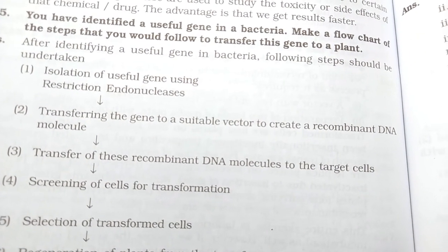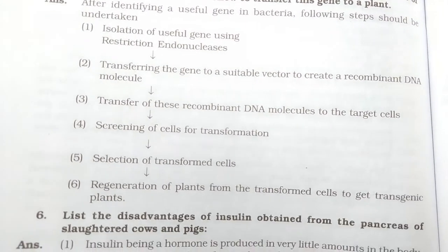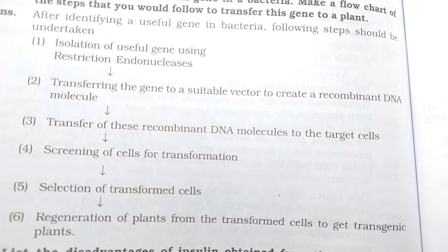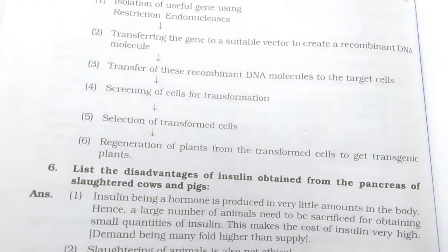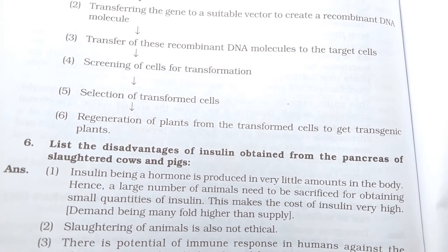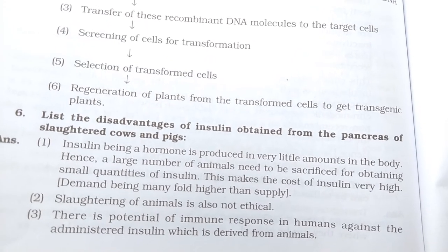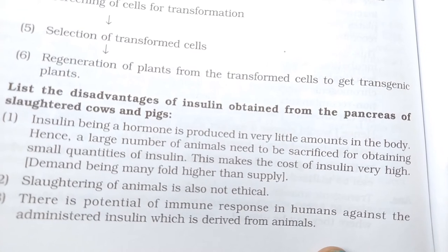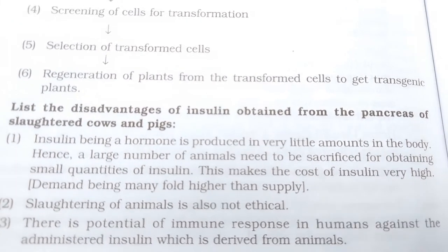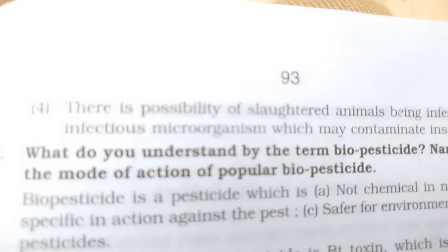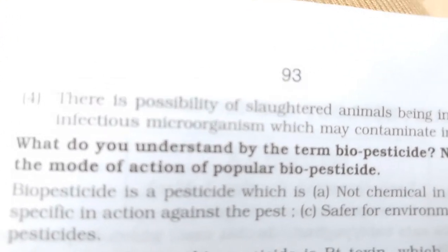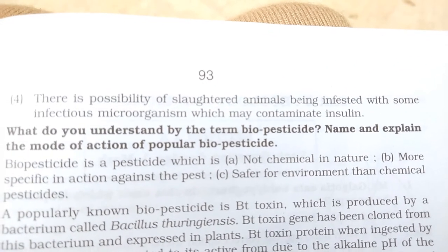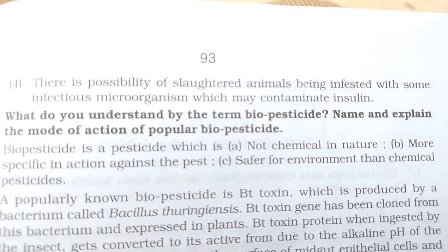List the disadvantages of insulin obtained from the pancreas of slaughtered cows and pigs. One point: there is the possibility of slaughtered animals being infested with infectious microorganisms which may contaminate the insulin. The full answer is shown.